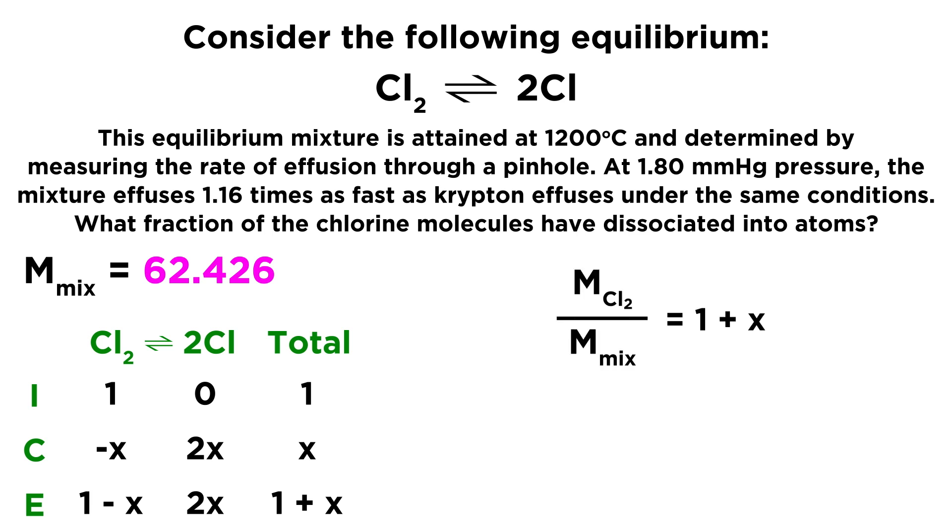Now, it is the case that the molar mass of Cl2 over the molar mass of the mixture is going to be equal to this 1 plus x that we just calculated. So let's go ahead and plug in the numbers that we have. We know that Cl2 has a molar mass of 71, and the molar mass of the mixture is what we just calculated. That's our 62.426. That's going to be equal to 1 plus x. Now we solve for x, and we get 0.137.